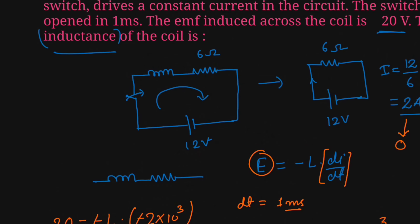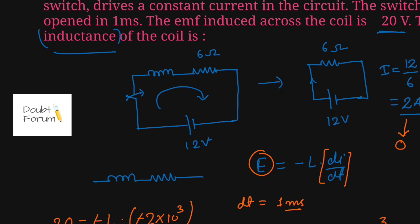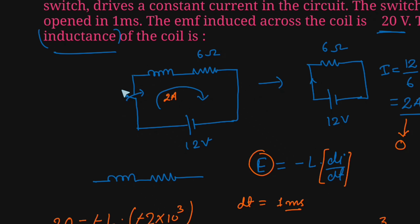To quickly revise: there is a coil of resistance 6 ohm connected across a 12 volt battery through a switch. Initially the switch is closed. Since we have DC voltage, the inductor behaves like a closed circuit, so this represents a 6 ohm resistor across a 12 volt battery. The current flowing through the circuit is V/R = 12/6 = 2 ampere before the switch opens.